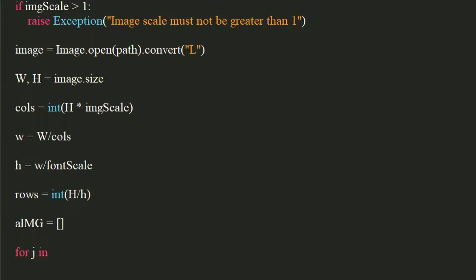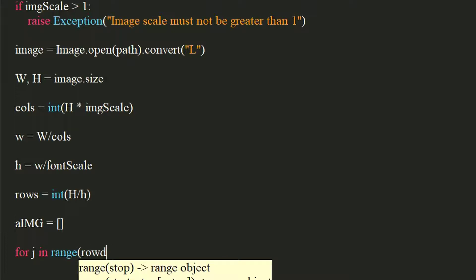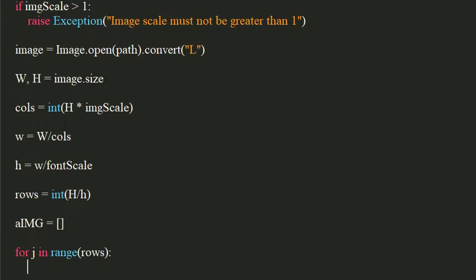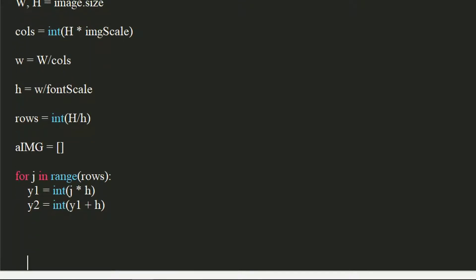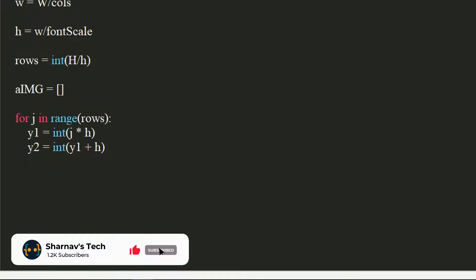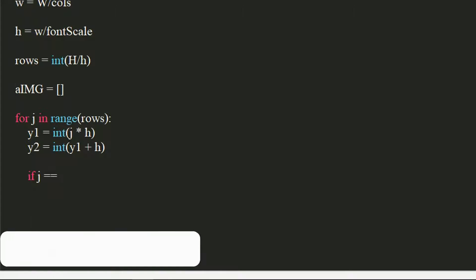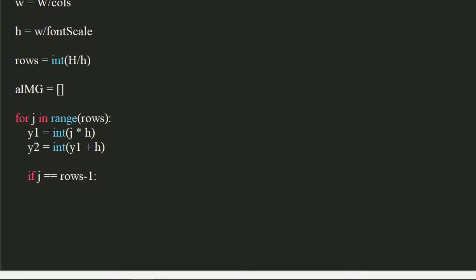Use a for loop in range of number of rows. We will now compute some coordinates which will be required to crop the image to a specified tile. The y1 coordinate will be the integer of j times h. The y2 coordinate would be the integer of y1 plus h. If j equals the last row, we will correct the y2 coordinate by setting it to the image's height. This is to avoid the top edge of the image from getting cut off.